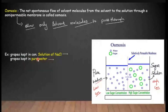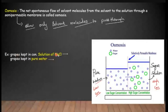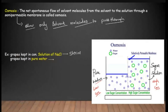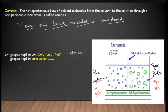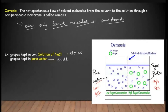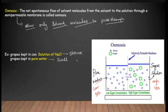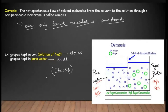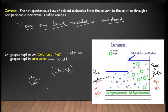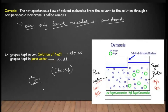Here you can see an example: grapes kept in a concentrated solution will shrink because of osmosis. When you keep these grapes in pure water, they will swell. Both situations arise due to the process called osmosis — that is, due to the inward and outward movement of solvent molecules from inside to outside and outside to inside.